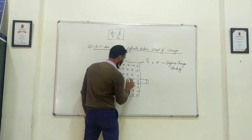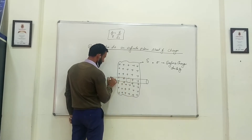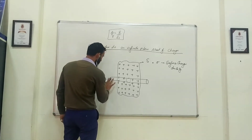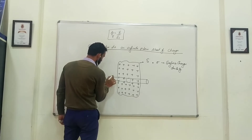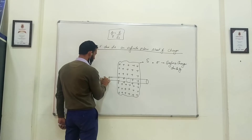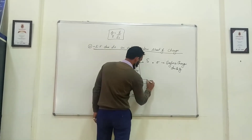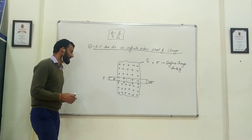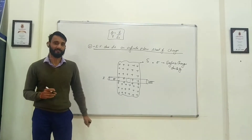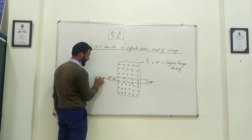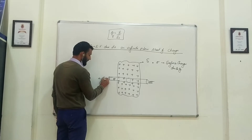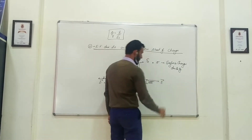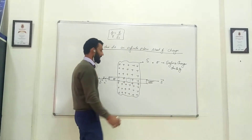The cylinder has three different surfaces. Whenever you are proving this, you should always keep in mind that you have to draw the directions of the electric field and the area vector. For a positive charge, the electric field will be outward and the area vector will be in the same direction — outward — because this is a positive charge.